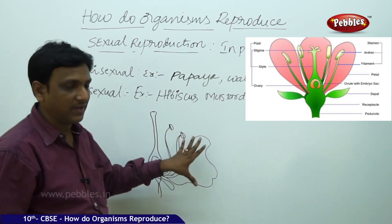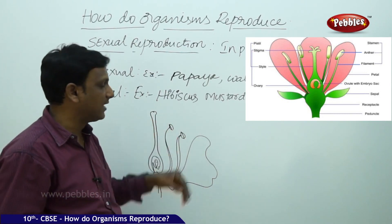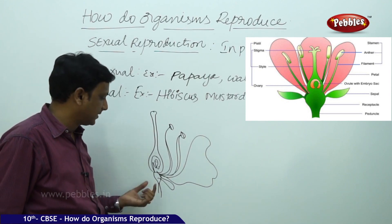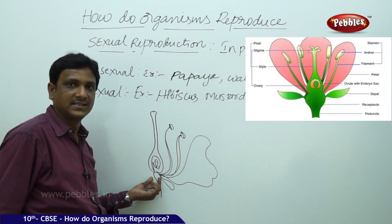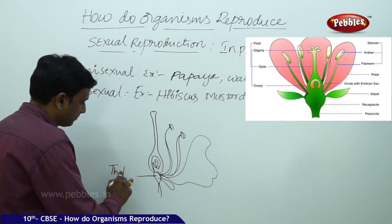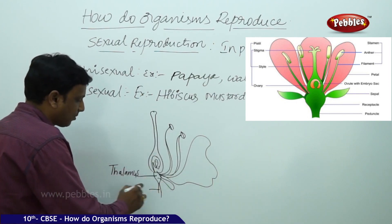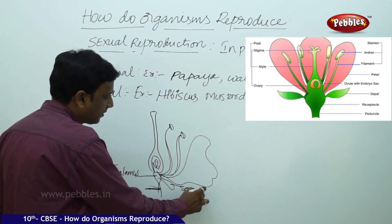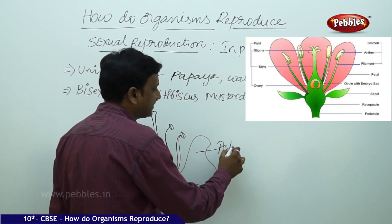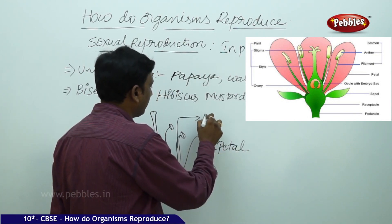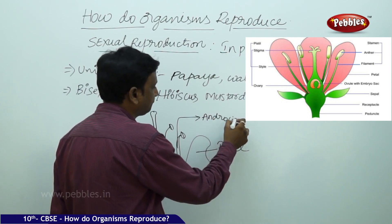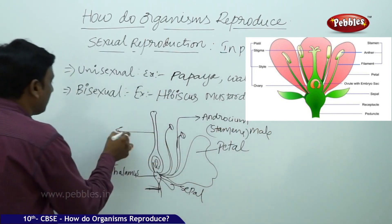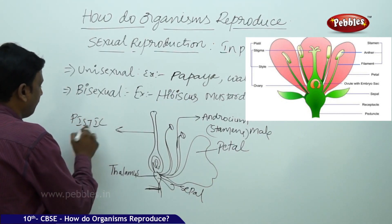Here we have different parts of a flower. This is a bisexual flower which has both female and male reproductive parts. It consists of a base called the thalamus, on which all the other parts are embedded. This is called the peduncle; this is the sepal; this is the colored part to attract insects called the petal; this is the male reproductive part — androecium or stamens; and this is the female reproductive part — the pistil.